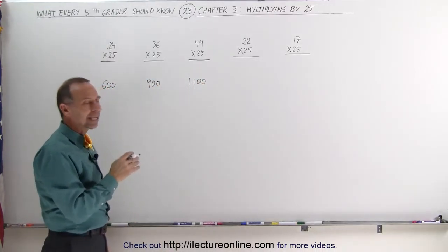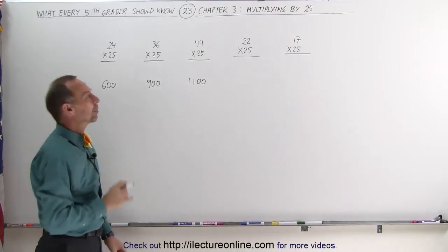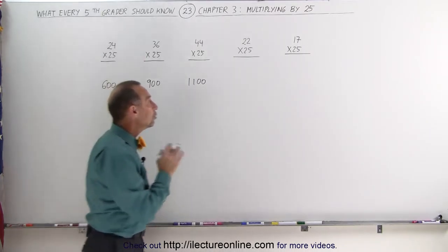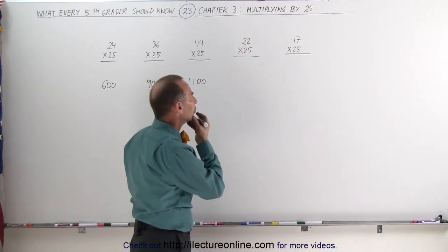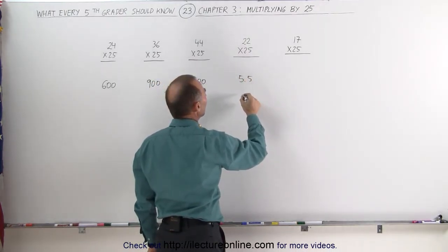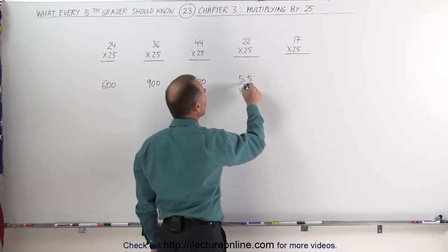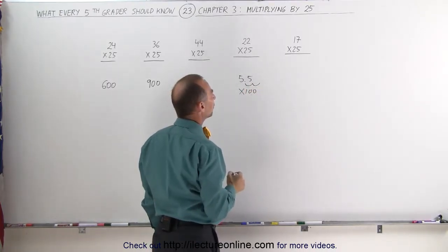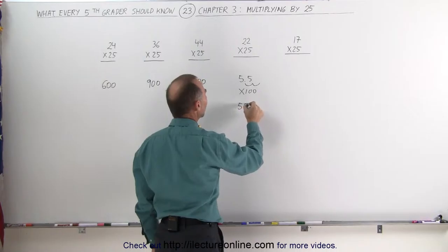But when you get a number like 22, it's a little bit more complicated, just a little, not a lot. 22 divided by 4, what does that equal to? Well that's actually 5.5 and then you have to multiply that times 100, which means you're going to move the decimal place over two places, the answer is 550.